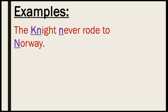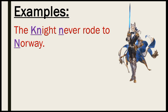Let's look at this example: 'The knight never wrote to Norway.' In this example, if we look at the word 'knight,' the first letter is K, but because it is silent, the sound produced is the 'N' sound — that is the initial consonant sound.